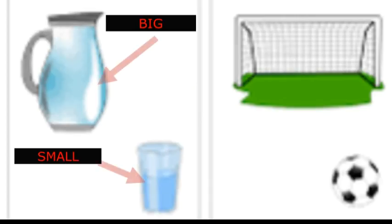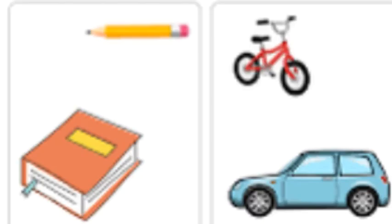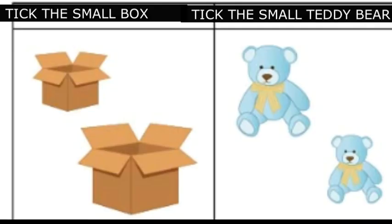Here is a big jug and a small glass. Big football, small football. Here is a big book and a small pencil. Big cover, small cycle.